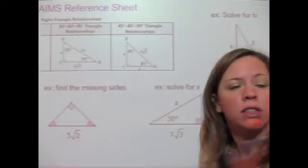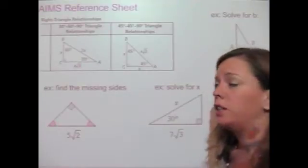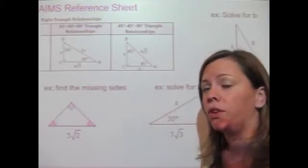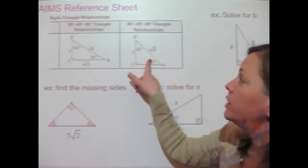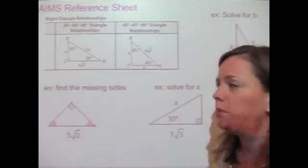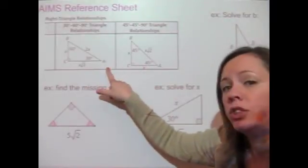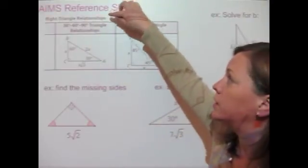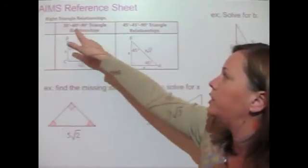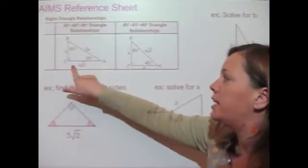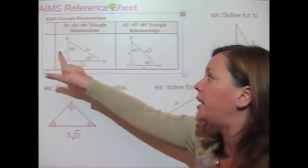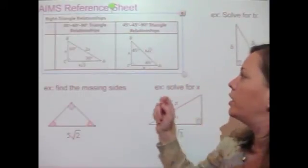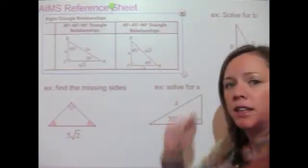Let's talk about what you'll see on the AIMS reference sheet. You don't have to memorize these formulas, but you should know where to look for them. On the second page there's a section on right triangle relationships showing the 30-60-90 triangle with x, 2x, and x√3, and the 45-45-90 triangle with x, x, and x√2 — exactly as I showed you.